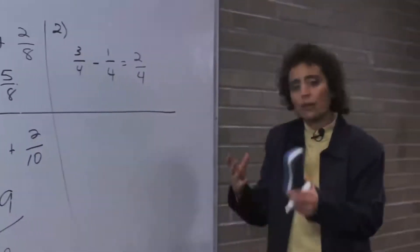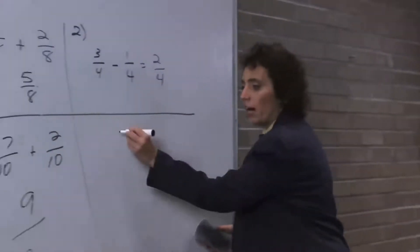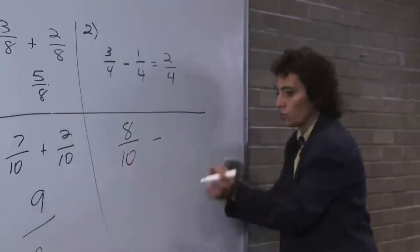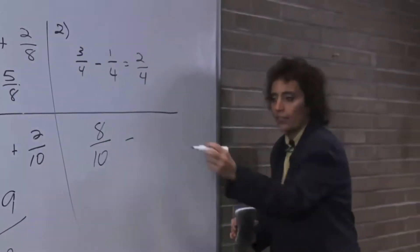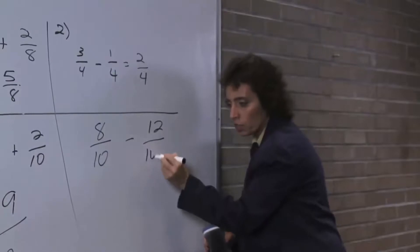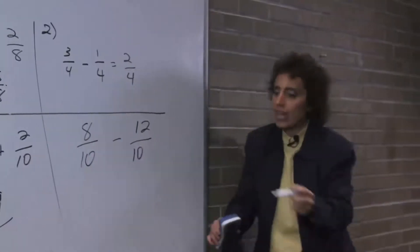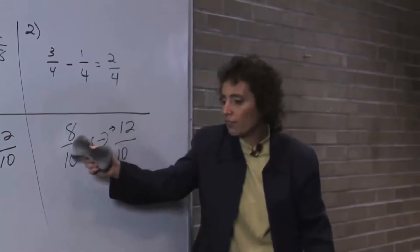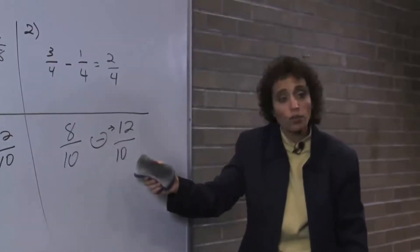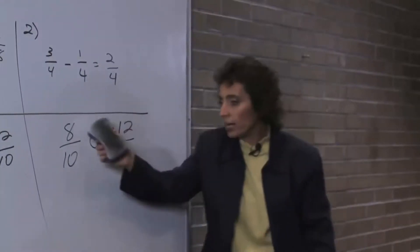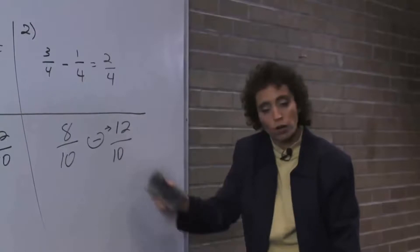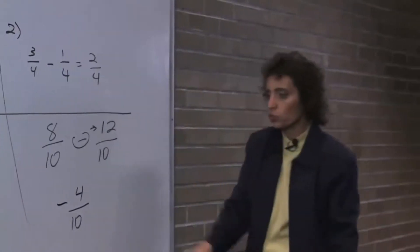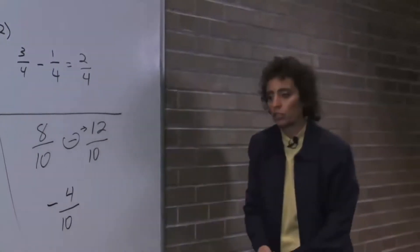Same thing if we have negatives and positives. If I have 8 tenths minus 12 tenths — think of the negative as being with the numerator, it's easier. This reads: I have 8 tenths, but I owe you 12 tenths. If I have 8 tenths but I owe you 12 tenths, then I owe you 4 tenths. And then of course we can reduce that fraction.